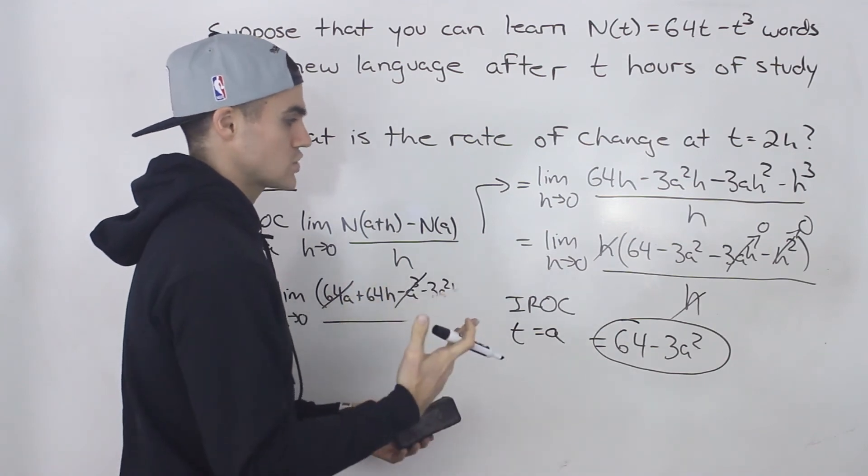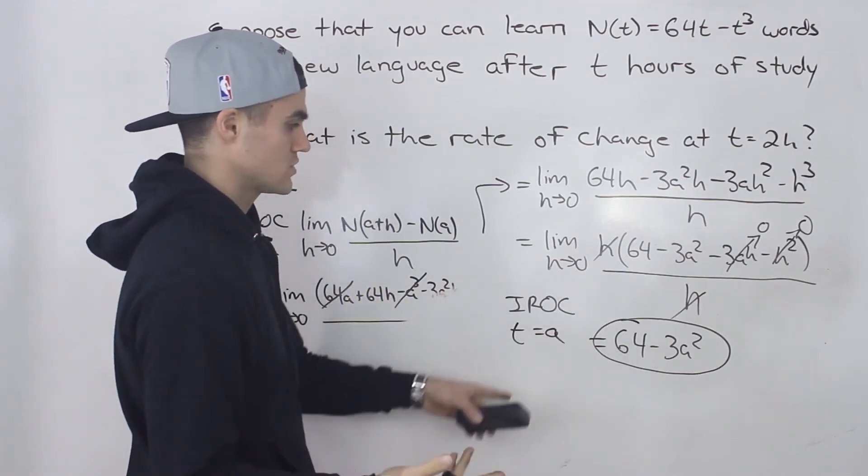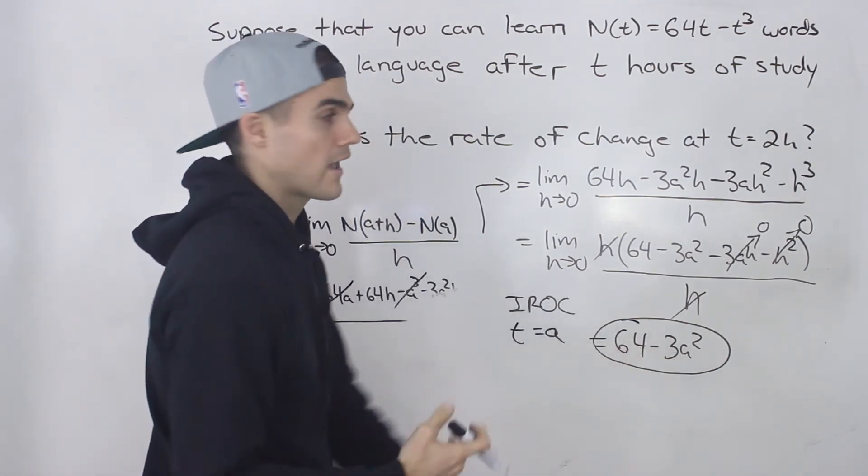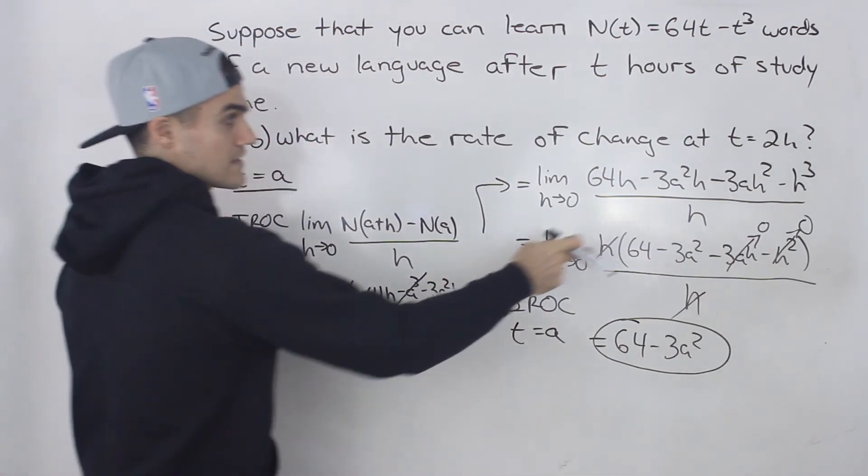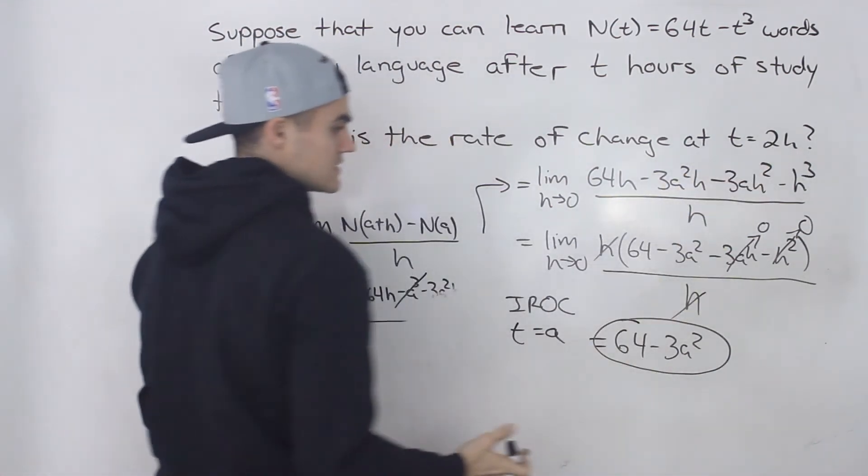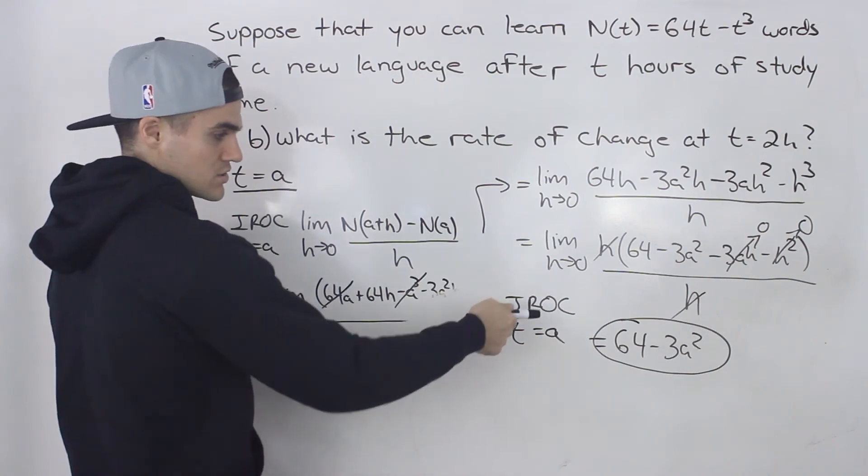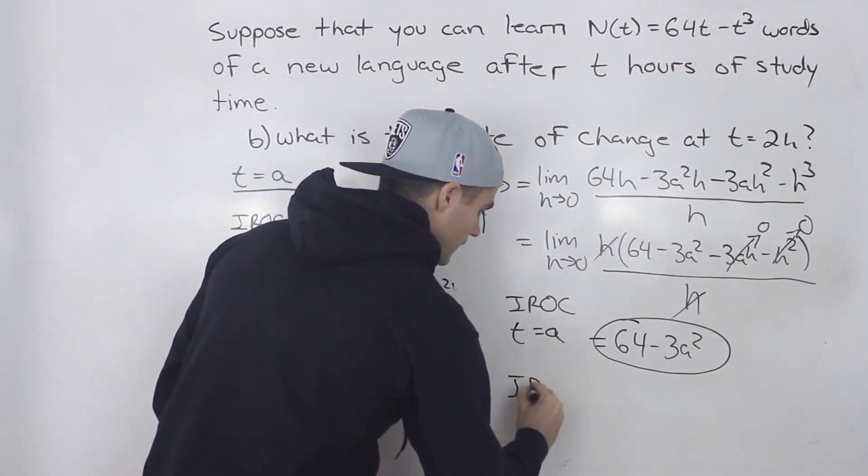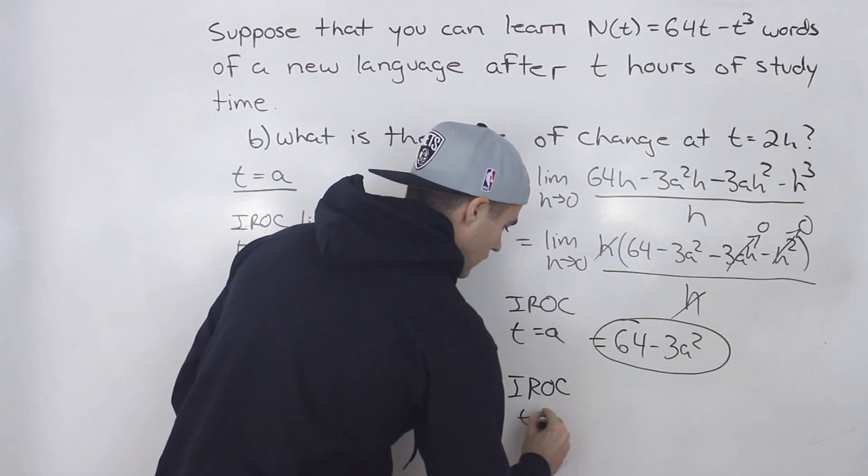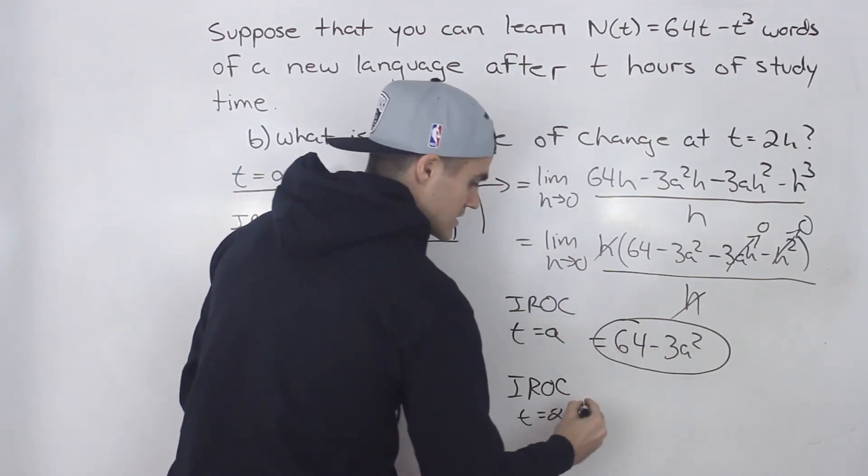So if we want to find the instantaneous rate of change at 5 hours, we just plug in 5 for A. In this case, we're finding the instantaneous rate of change at a t value of 2. So if we plug in 2 for A in this expression,